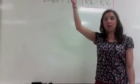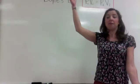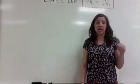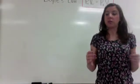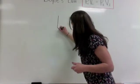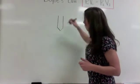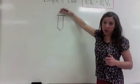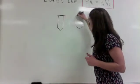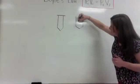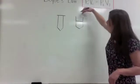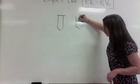If the pressure goes up, the volume is going to go down. If the volume goes up, the pressure is going to go down. A good example of this is in a syringe. When you have a syringe, it's going to have a lot of volume and regular pressure. If you push on that syringe, the volume of the gas inside is going to decrease.